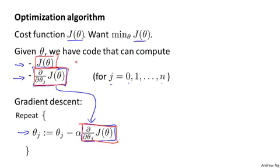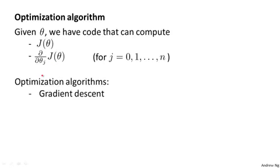For gradient descent, technically you don't actually need code to compute the cost function J of theta — you only need code to compute the derivative terms. But if you think of your code as also monitoring convergence, we'll think of ourselves as providing code to compute both the cost function and the derivative terms. So having written code to compute these two things, one algorithm we can use is gradient descent.